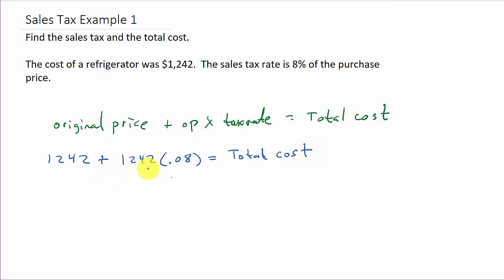So all you've got to do now is plug this into your calculator. Total cost equals 1242 plus 1242 times 0.08, and that gives us $1341.36. So that's the total cost of the refrigerator.